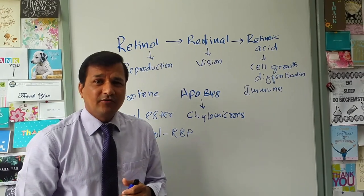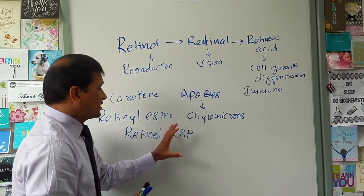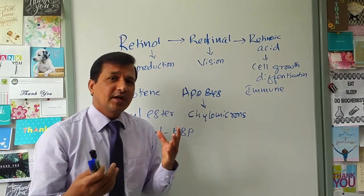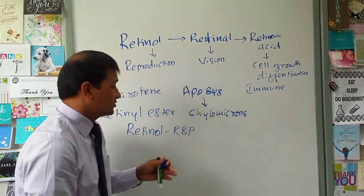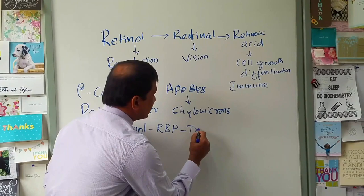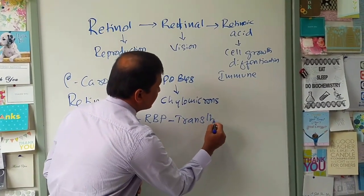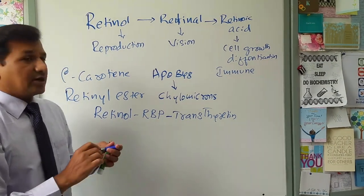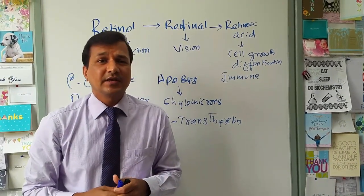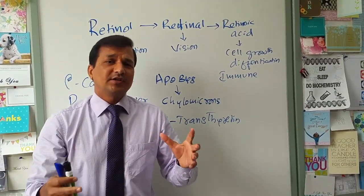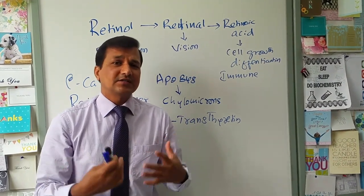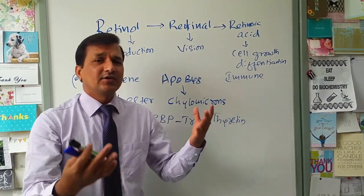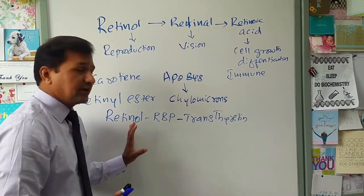In the blood, retinol binds to retinol binding protein (RBP), which is synthesized in the liver. This serves as the transport form of vitamin A. Because the molecular weight of this complex is relatively low, it could be filtered by the glomerulus. To prevent this, another protein called transthyretin binds to the RBP-retinol complex, preventing glomerular filtration.